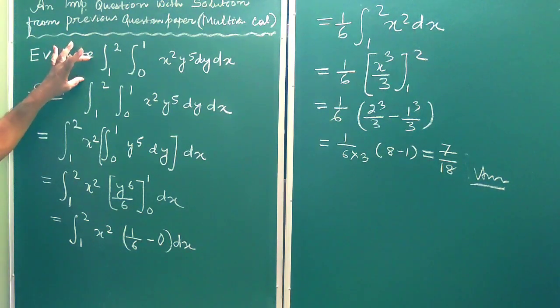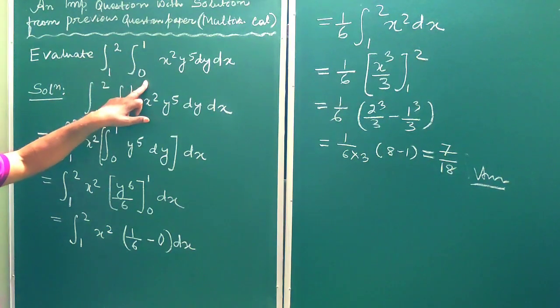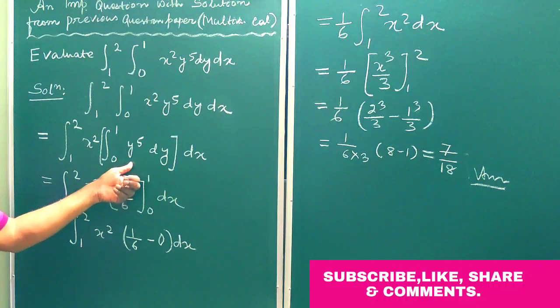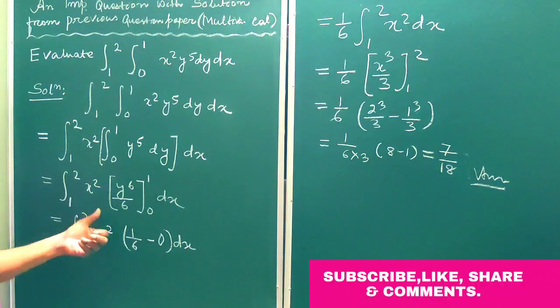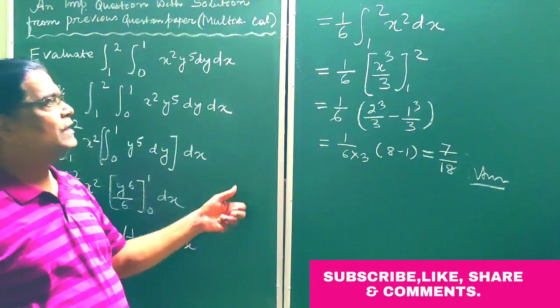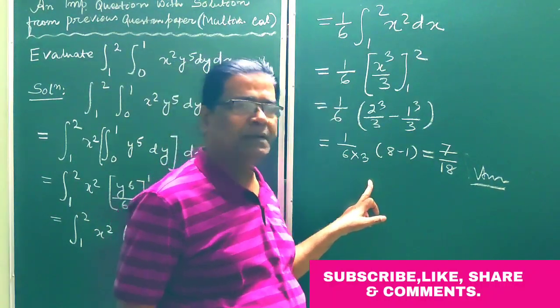Here we have to evaluate the double integral from integration from 1 to 2, then integration from 0 to 1, x square y to the power 5 dy dx. Here the inner integral is the integration from 0 to 1 y to the power 5 dy that we have to evaluate first. Then we have to evaluate the integration with respect to x. And finally the answer is 7 by 18.